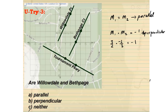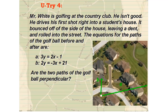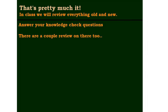Look at the slopes of these lines and determine whether Willowdale and Bethpage streets are parallel, perpendicular, or neither. For the next u-try, determine whether the paths are perpendicular or not by finding the slopes of mA and mB and comparing them. That's the end of our video — please bring any questions to class so we can look into them further.